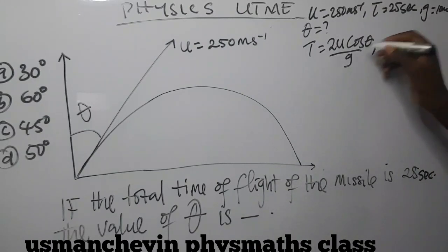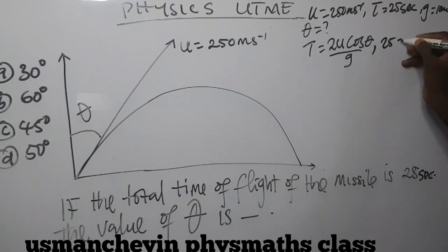We can say that our time of flight is 25 equal to 2 times 250 cos theta all over 10.